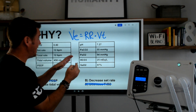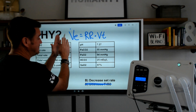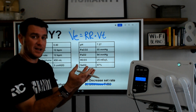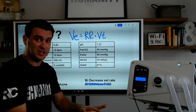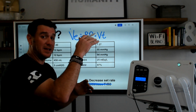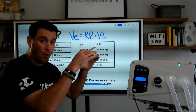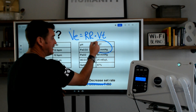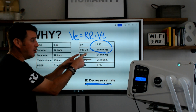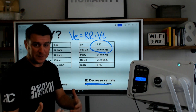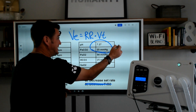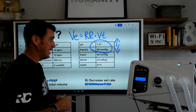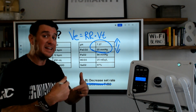If we decrease minute ventilation, then CO2 will go up and pH will go further south — more acidotic. We've already identified that CO2 is too high for this patient. So we need to get that CO2 down to help the pH come back up. To get CO2 down, we need to increase minute ventilation.